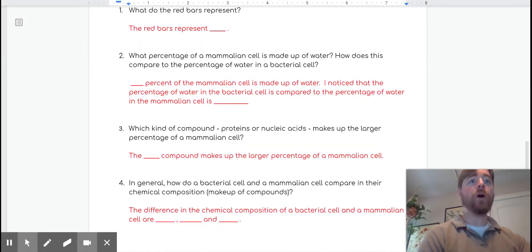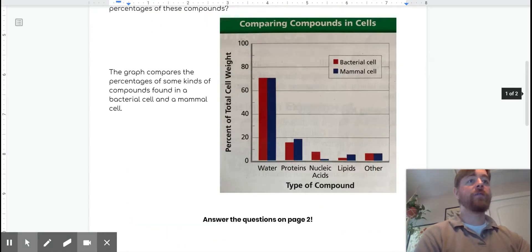Question two, what percentage of a mammalian cell is made up of water? How does this compare to the percentage of water in a bacterial cell? So you hit up, find mammalian cell for water. How does that compare to the bacterial cell? How are they alike? How are they different?